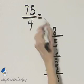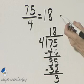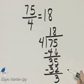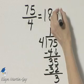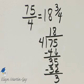Now let's write down our mixed number. This is the whole number part, 18. Then we write the fraction part as the remainder over the divisor, so that would be 3 fourths. The mixed number is 18 and 3 fourths.